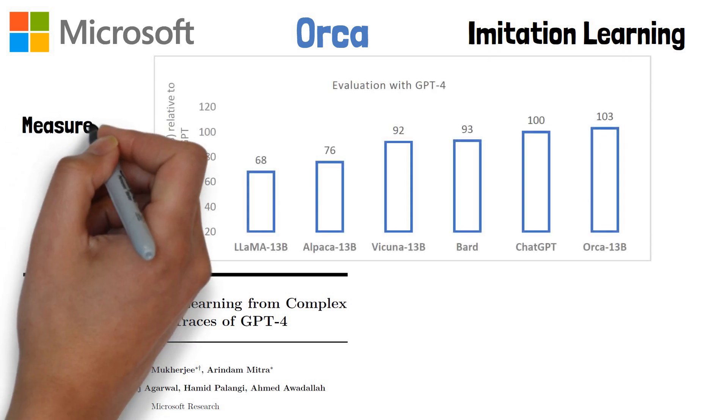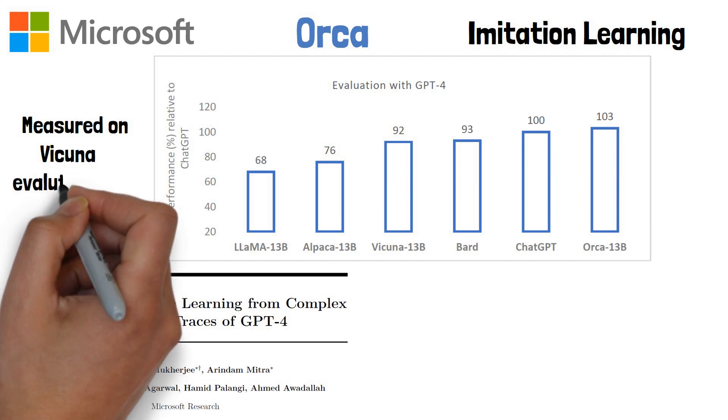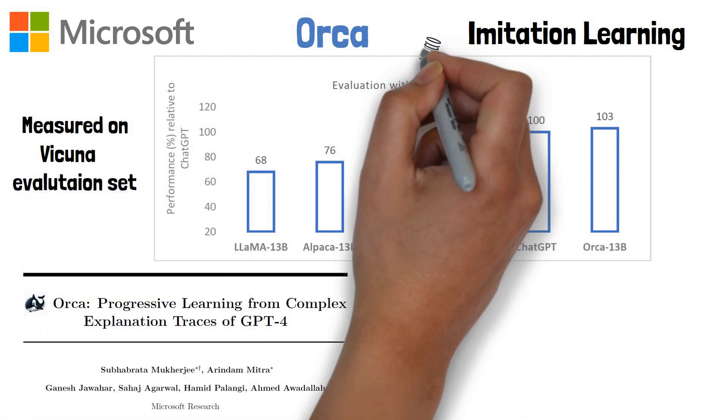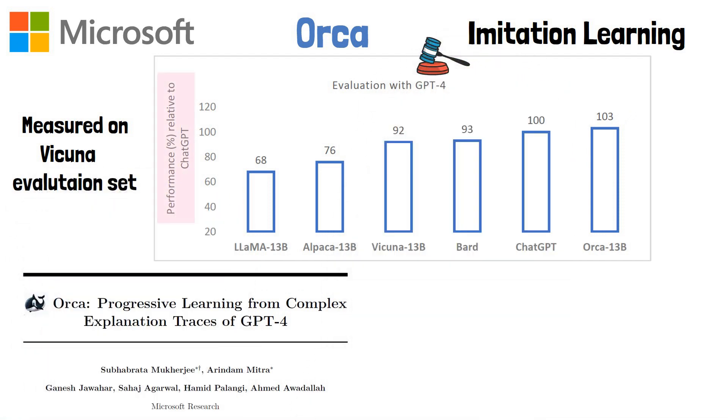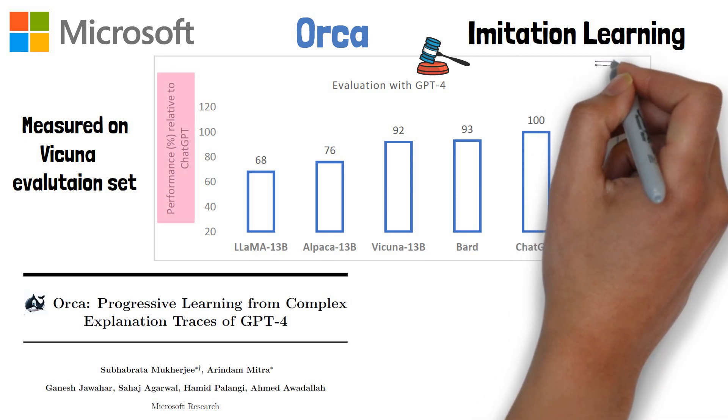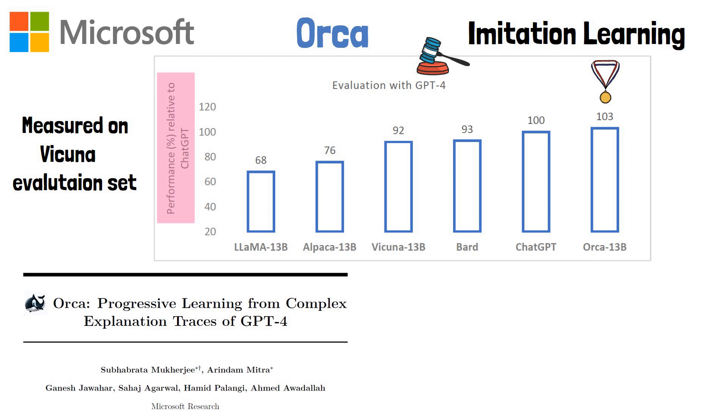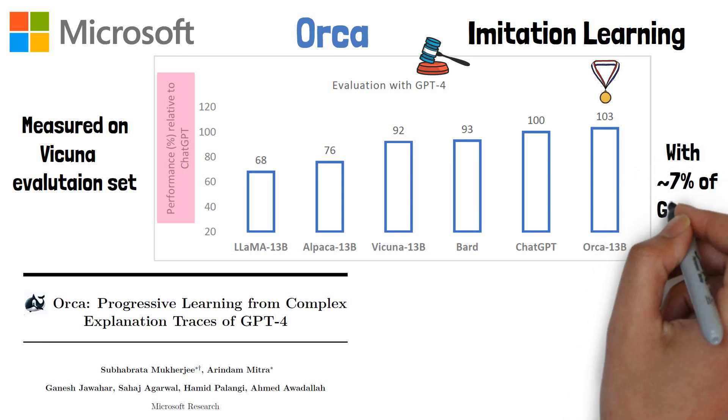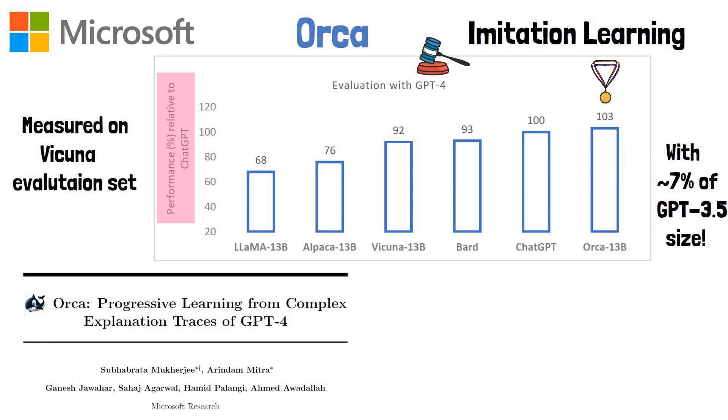For example, in this chart which measures performance on Vicuña evaluation set using GPT-4 as the judge, where results are visualized with relative performance to just GPT, they show that ORCA achieves better results than many famous large language models including ChatGPT while being about 7% of its size.